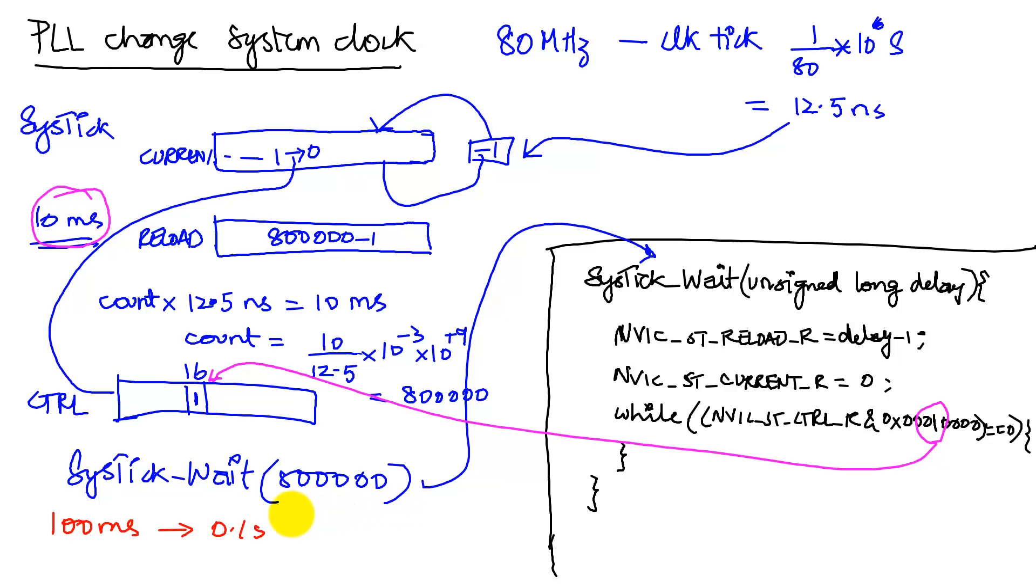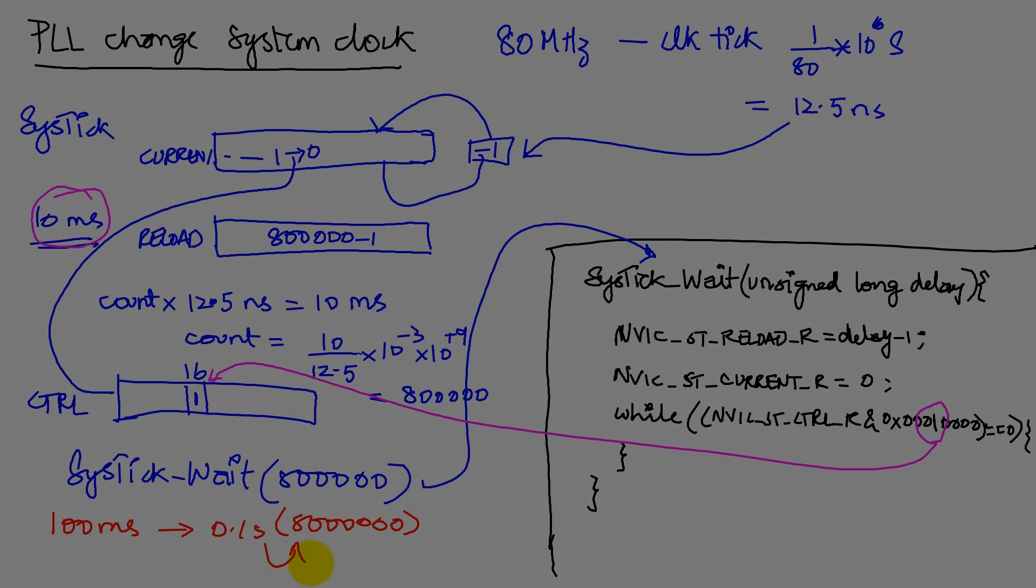Well, all I'm going to do is I'm going to call the subroutine with an extra 0 here. Rather than 800,000, I put an extra 0, so it's 8 million, and this will make my clock, my subroutine, wait for 0.1 seconds.